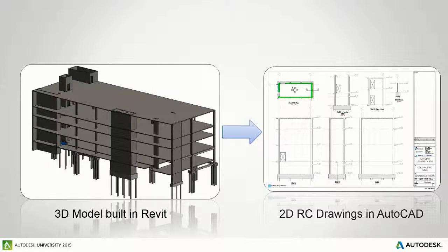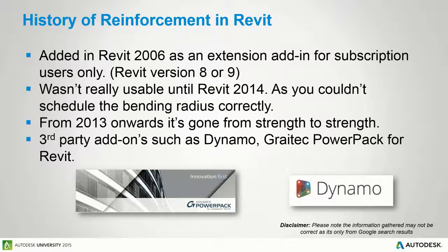I did a bit of history on Revit. Revit extensions came out in 2006, around version 8 or 9, and they had rebar tools in them, but they weren't that great. It's only from version 2014 that you can actually put bars in properly - before that, it couldn't do the bar-bending radius. So for me it was a waste of time because I'd have to go out to Excel and do my scheduling there with no link. Realistically, from about 2013, Autodesk have really improved the way it works. They've added fantastic new tools out of the box. I'm not going to show you Dynamo today, but I'll show you some great tools with a power pack and what's in Revit itself.